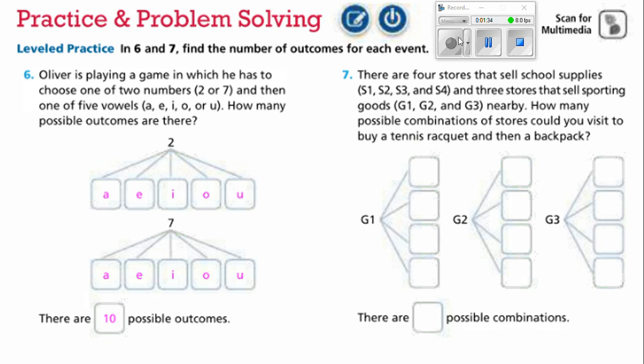Well, let's see. First of all, we know there's 3 stores that are going to sell this tennis racket, right? Because it's a sporting goods store. And then there are 4 different stores where we could find a backpack. That's 3 times 4, right? Because each of these could be one of the stores.